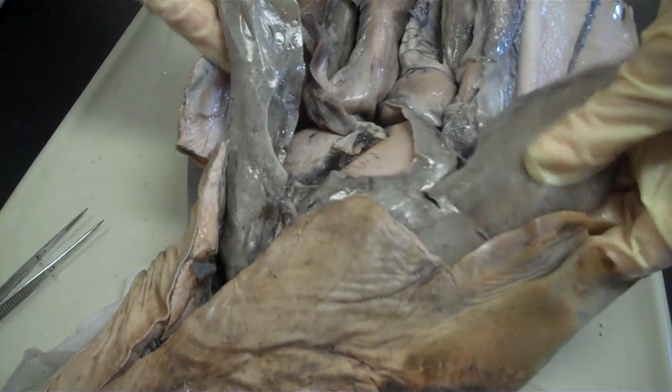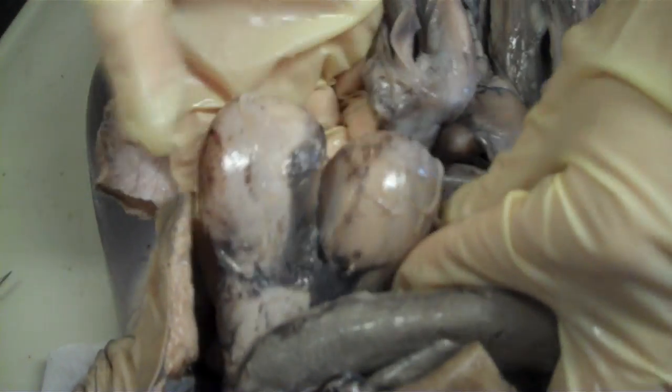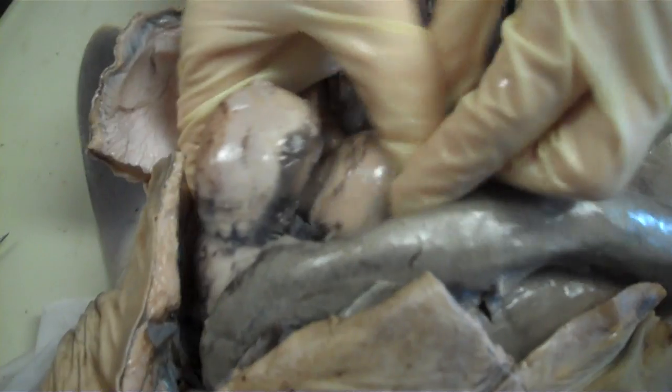So again, this would be the liver, two large lobes with the gallbladder in the center. When you move the liver aside, you find her gonads. So these are the ovaries. You can see the eggs bulging out of her ovaries.